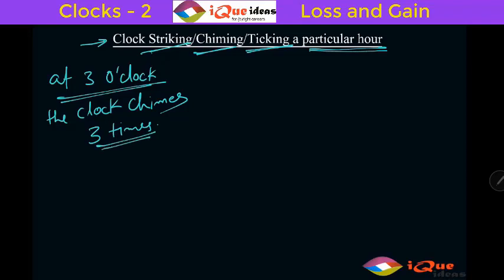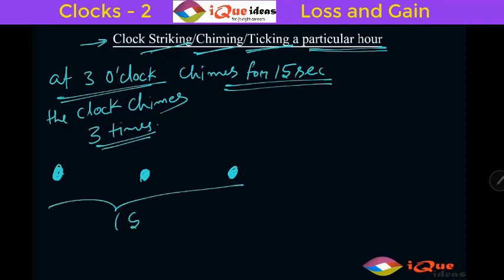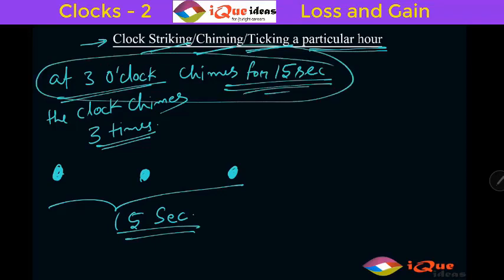Now what is the meaning of 3 times here? Suppose at 3 o'clock the clock chimes for, let's say, 15 seconds. What does it mean? There are 3 strokes and the total duration of 3 strokes is 15 seconds. That is what the question is saying. At 3 o'clock the clock chimes for 15 seconds.